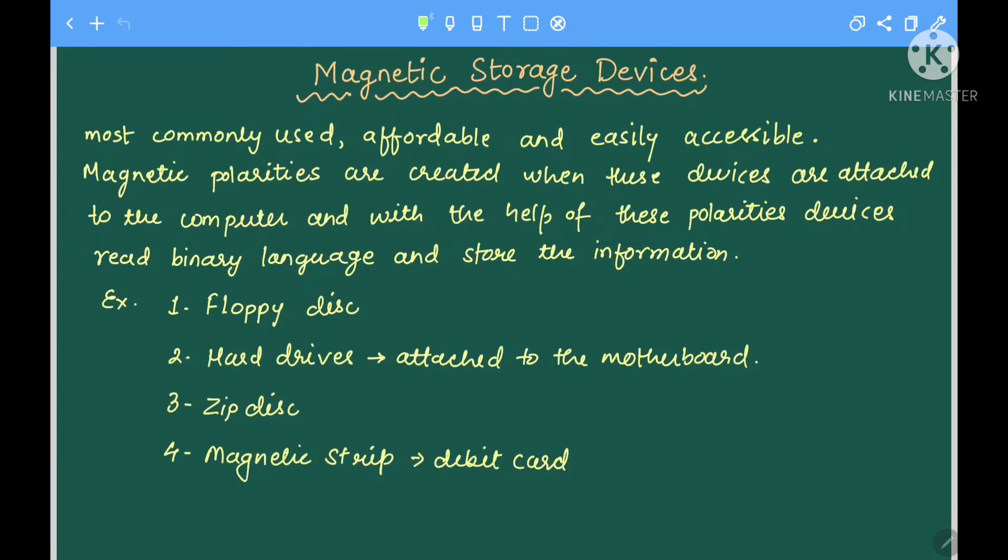The first is magnetic storage device. They are most commonly used, affordable, and easily accessible devices. Magnetic polarities are created when these devices are attached to the computer, and with the help of these polarities, devices read binary language and store the information.